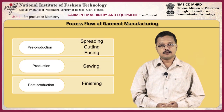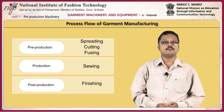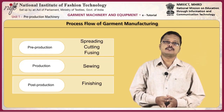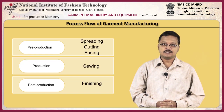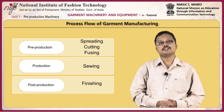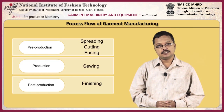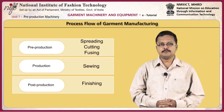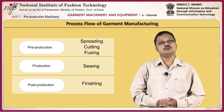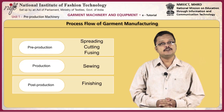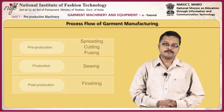Let us begin by looking at the process flow of garment manufacturing. There are three stages: pre-production, production, and post-production. The pre-production stage comprises of spreading, cutting, and fusing. In the production stage, the main activity is sewing. In the post-production stage, important activities include finishing and packing.